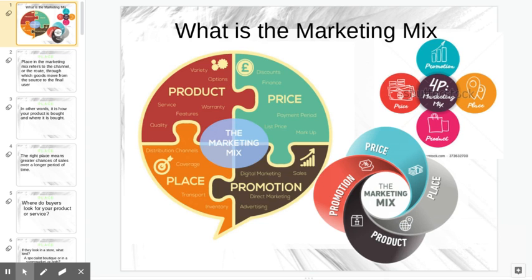We've talked about the marketing mix before — the four P's: product, price, place, and promotion. In the previous unit, we talked about product: what you're going to make, what it's going to look like, what it's going to be. Those things fall under the product P. For this unit, we're going to talk about place.